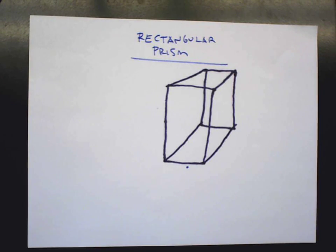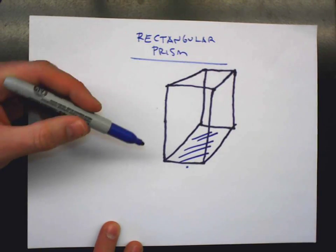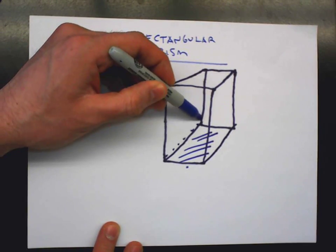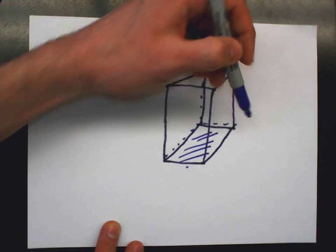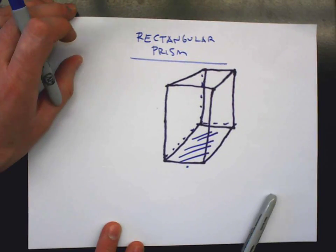Awesome. And then sometimes, again, we can shade, like, the base or whatever, or dash these lines to make it all fancy like Aureli was doing. Cool.